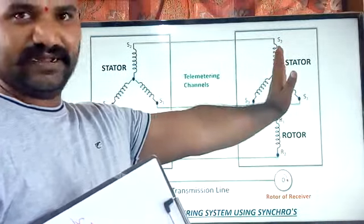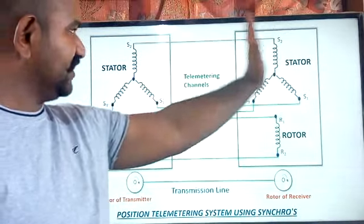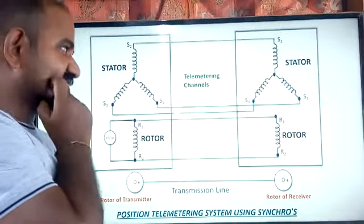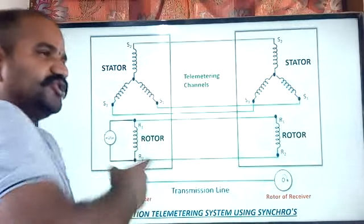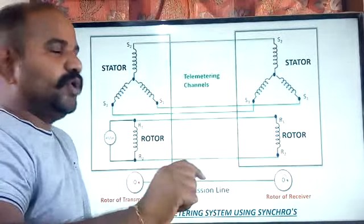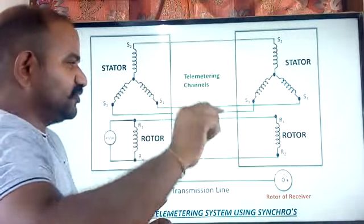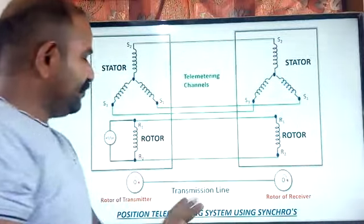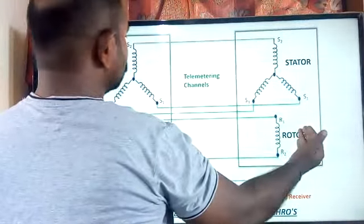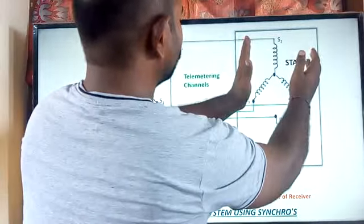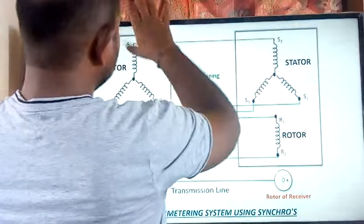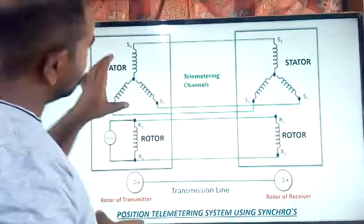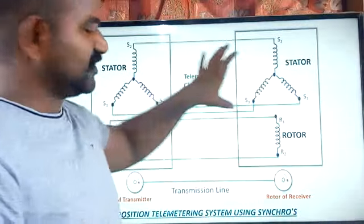This is the transmitting end and this is the receiving end. Before starting the telemetering system, the rotor position is adjusted to a null value. We expect that when this rotor is adjusted to a particular position, the receiver rotor is also at the same angular position. When both are in the same position, the induced EMF at both ends is equal, so the current passing through the channel is zero.